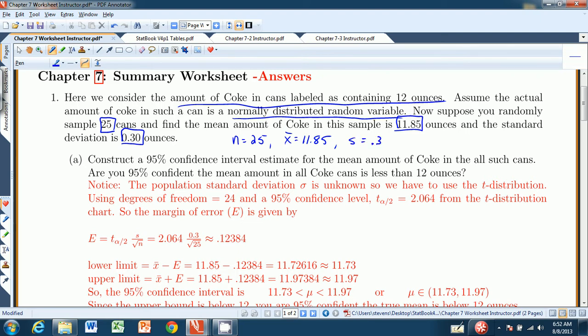For part A, the first question is construct a 95% confidence interval estimate for the mean amount of Coke in all such cans. The biggest mistake that students make on this particular problem is they go right to Chapter 7.2. But that's actually not true. This is a 7.4 problem. And the reason is the population standard deviation is unknown. Sigma is unknown. Remember, you only know the population standard deviation under special circumstances. It just said we had a sample with a mean of this and a standard deviation. So we actually have the sample standard deviation, not the population. So sigma is unknown.